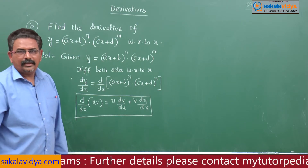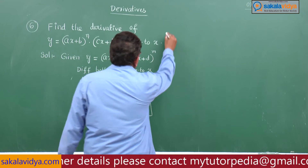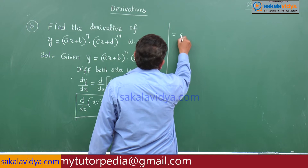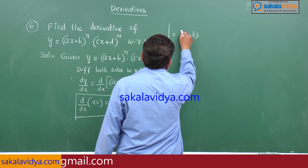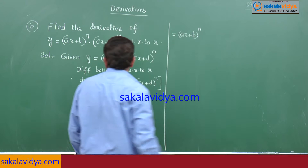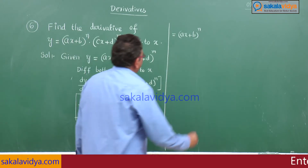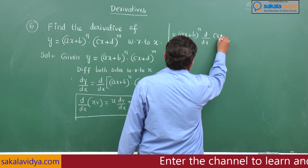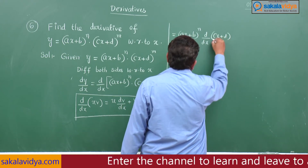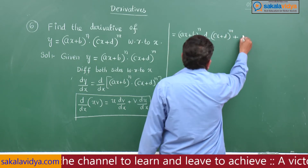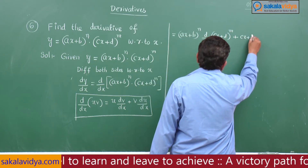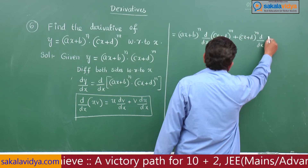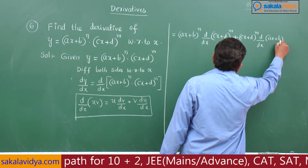Applying the UV rule, this equals (ax + b)^n · d/dx[(cx + d)^m] plus (cx + d)^m · d/dx[(ax + b)^n].